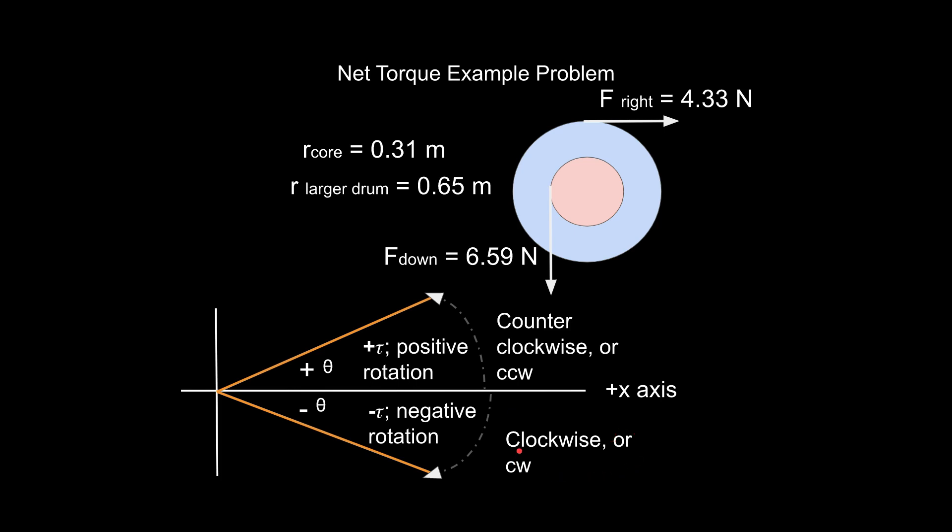If you're measuring from below the positive x-axis, we can call that clockwise and say that as a negative rotation with a negative torque and a negative angle involved. Just by convention, that's how we do it. So we consider this direction counterclockwise to be positive, this direction clockwise to be negative.